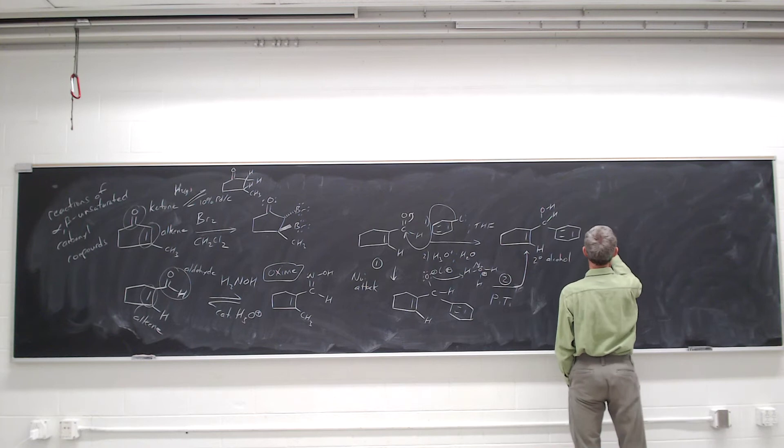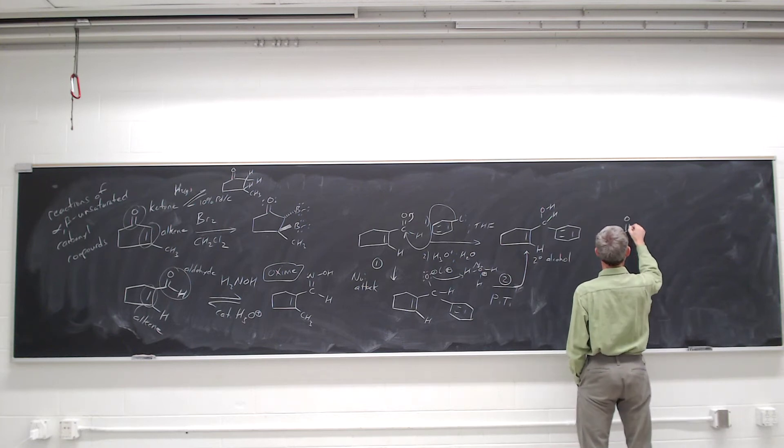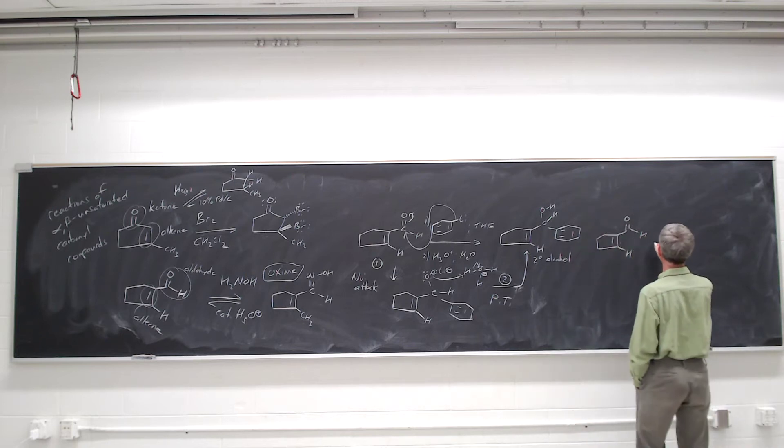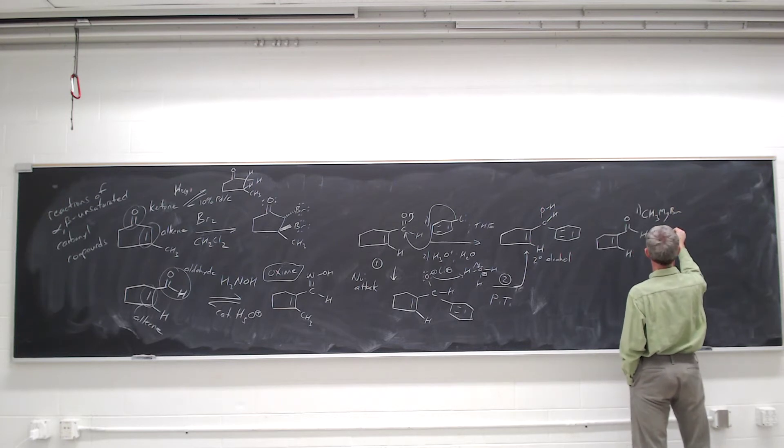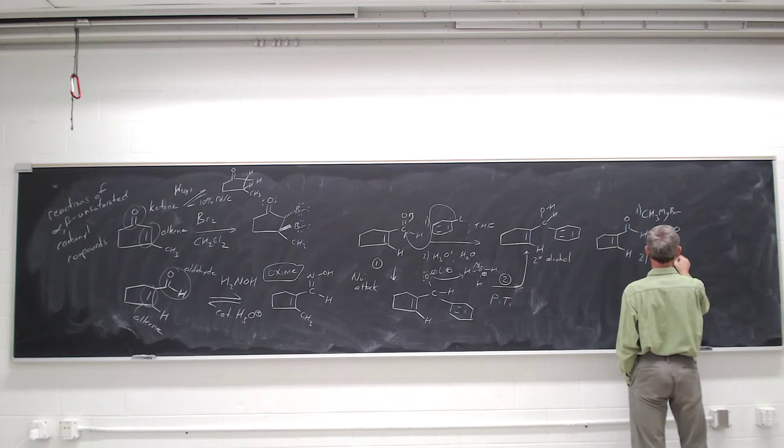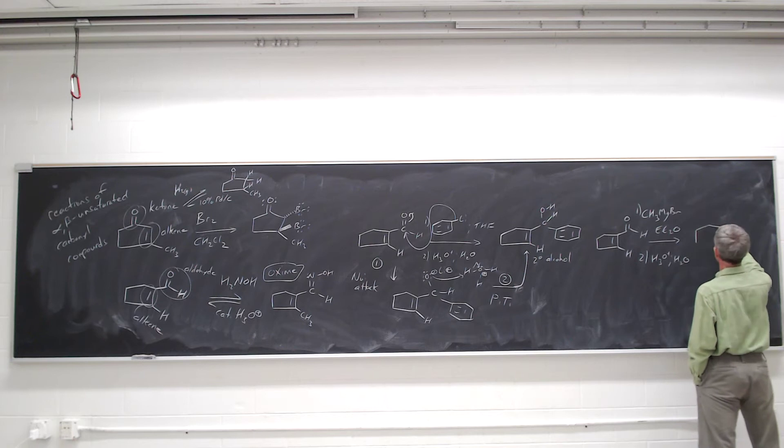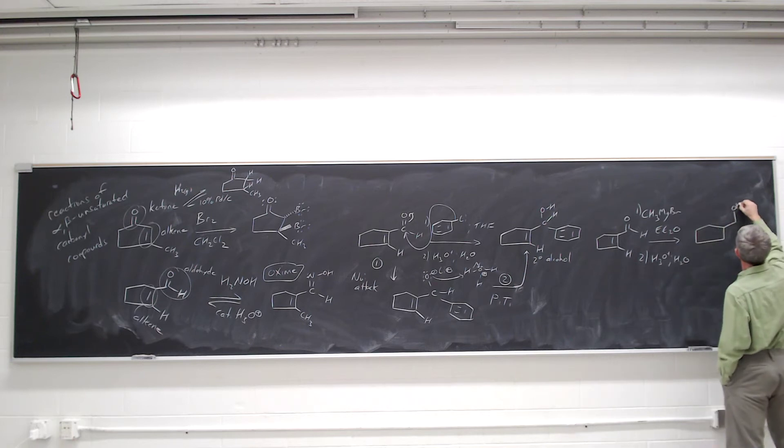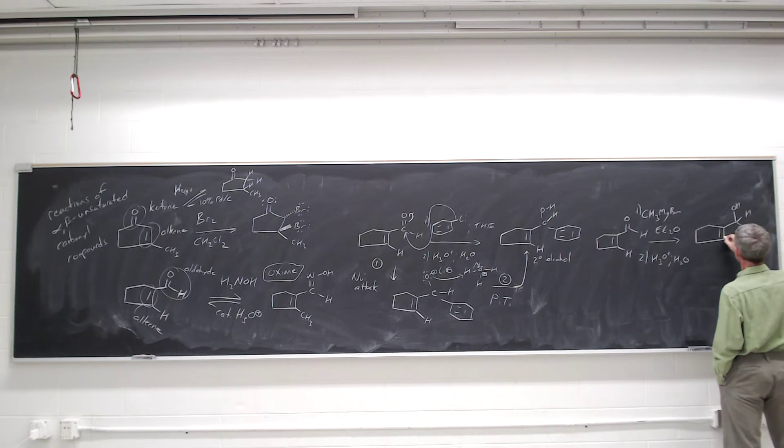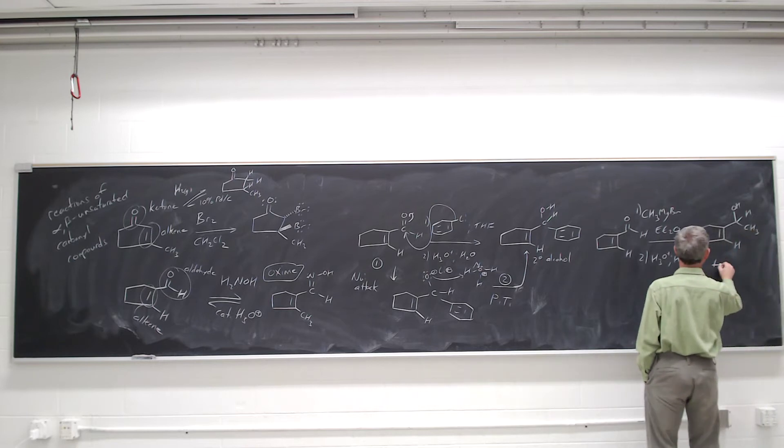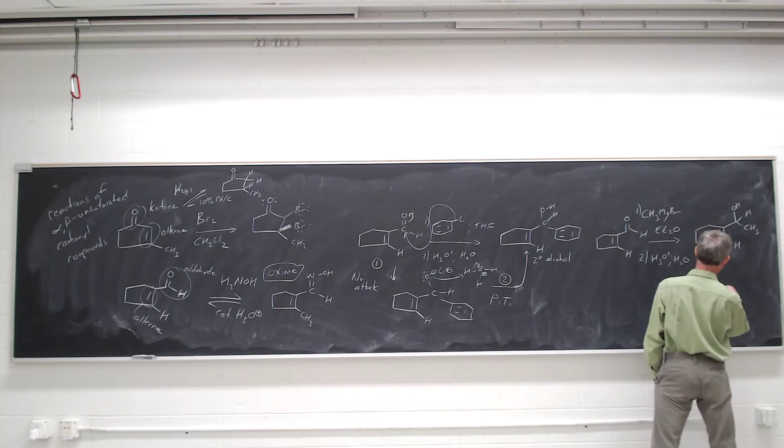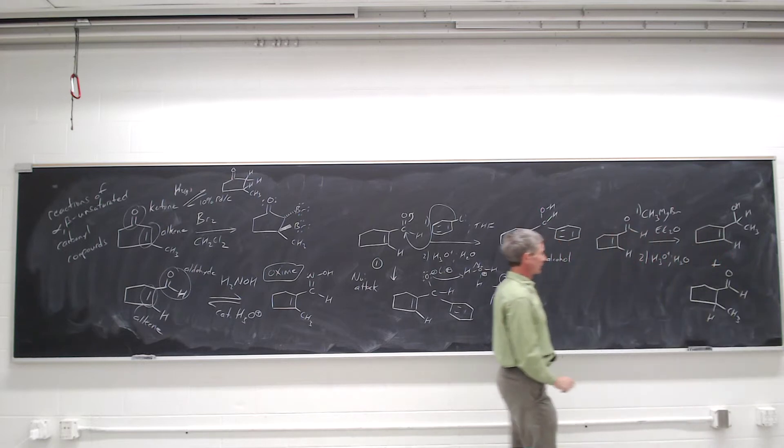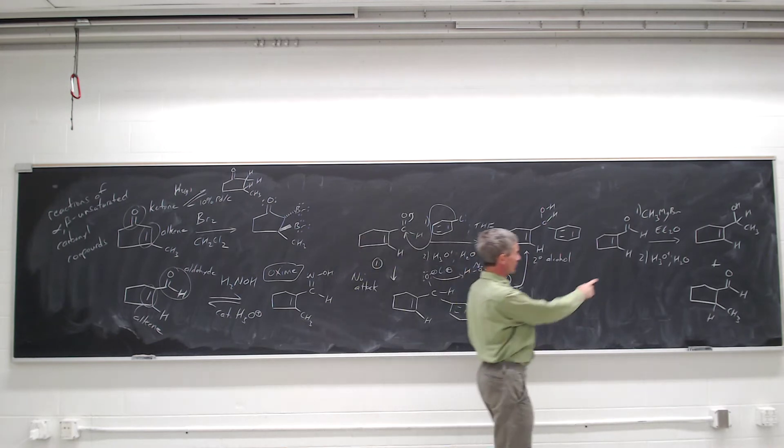If we take that same aldehyde, however, and instead of using an alkyl lithium as our organometallic reagent, we add methyl magnesium bromide, we do get some of the product that you might expect - the secondary alcohol - but in addition to the secondary alcohol, we get another product where instead of adding the methyl group to the carbonyl carbon, we add the methyl group to the beta carbon.